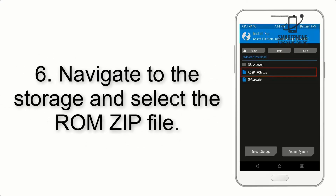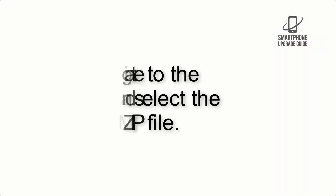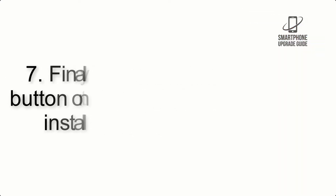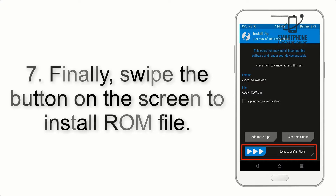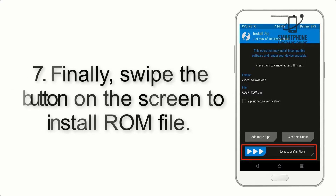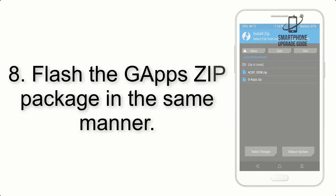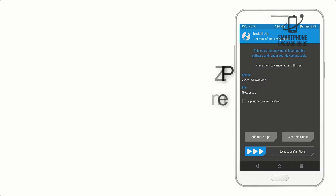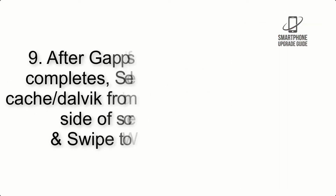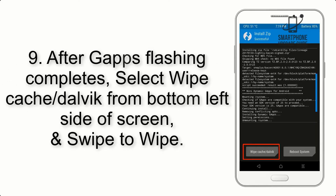Step 6: Navigate to the storage and select the ROM zip file. Step 7: Finally, swipe the button on the screen to install the ROM file. Step 8: Flash the GApps zip package in the same manner.